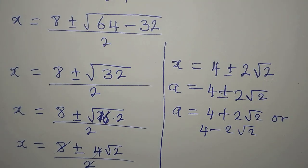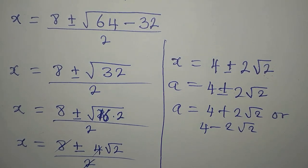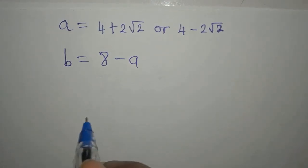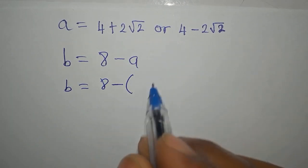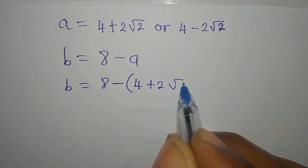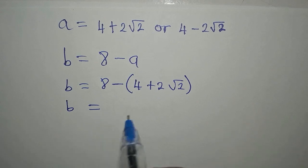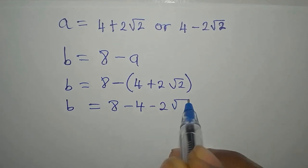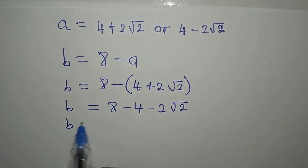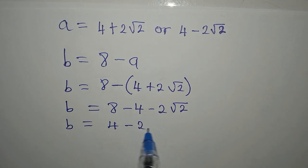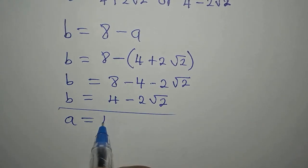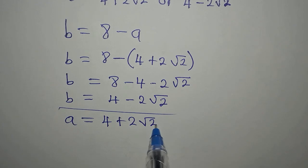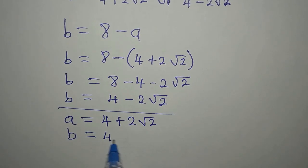But from here, we are expected to get the corresponding values of B. So let's go there. So our B now will be 8 minus... In place of A, I write 4 plus 2 root 2. So that B will be equal to 8 minus 4 minus 2 root 2. And our B will be equal to 4 minus 2 root 2. So this is to say that when A is equal to 4 plus 2 root 2, B is equal to 4 minus 2 root 2.